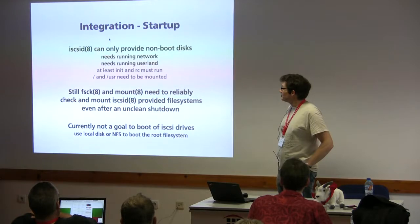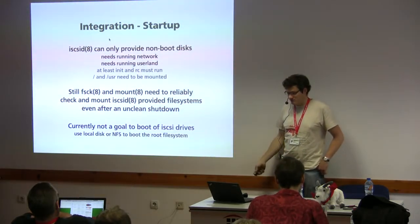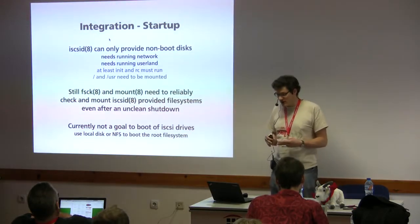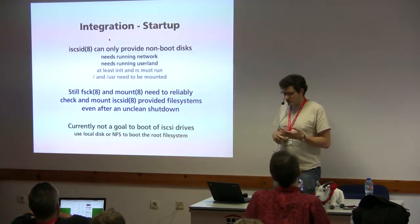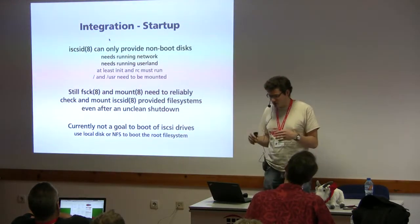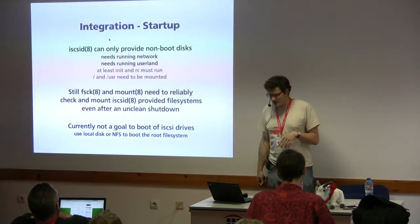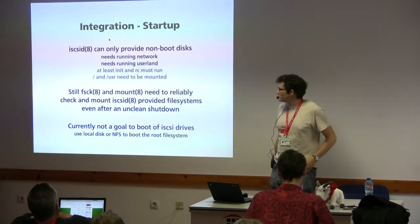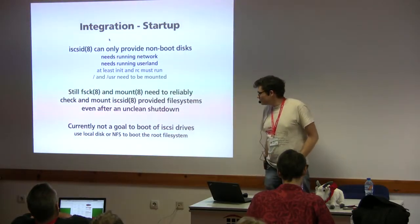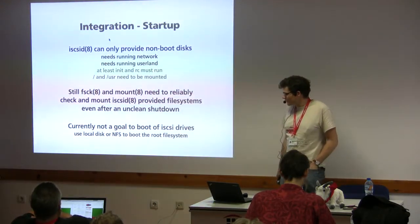Currently, iSCSID can only provide non-boot disks, because it requires a running network and a running user-land daemon — at minimum, init and rc must be running, somewhere between single-user mode and full multi-user. Root and /usr need to be mounted since iSCSID lives in /usr. It would be possible to make a static binary on the root partition to allow mounting /usr over iSCSI, though booting off local disks or using NFS for root is a practical workaround.